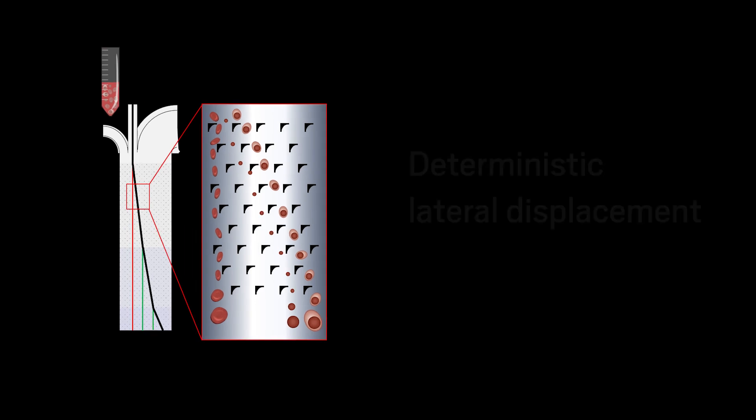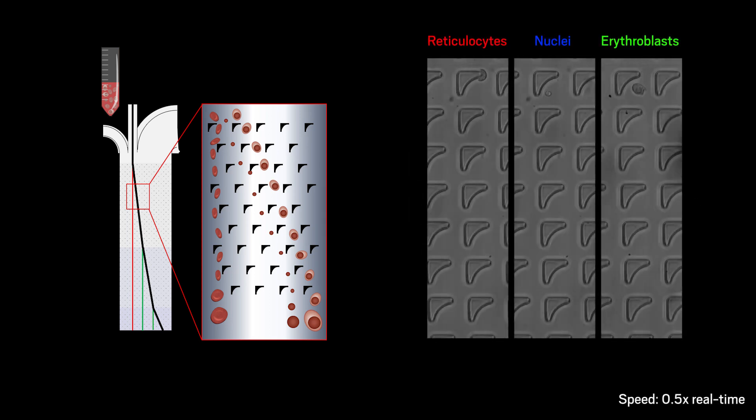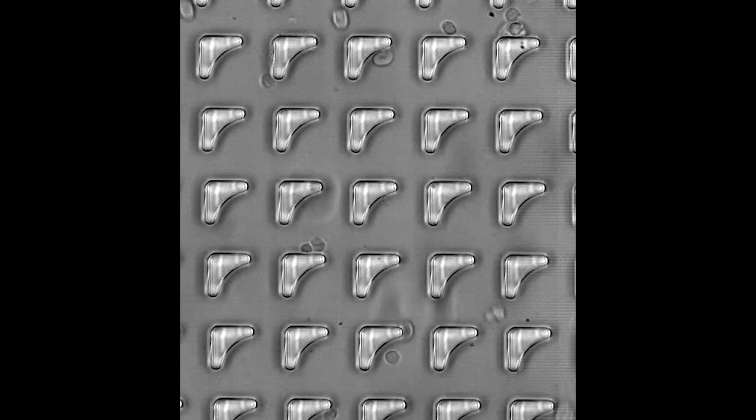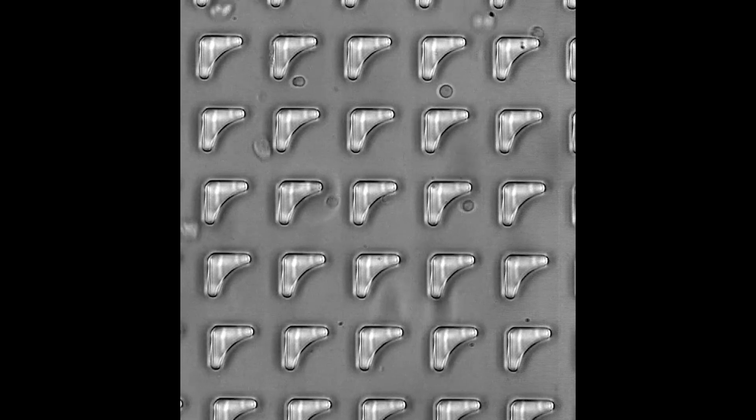One method is called deterministic lateral displacement. In this approach, the cells and cell components' unique size and deformability cause them to interact differently with pillared structures. Like a rigged game of Plinko, reticulocytes tend to fall to the left, whereas nuclei and erythroblasts slide to the right. This method can produce reticulocyte collections that are as pure as those sorted by FACS, but at two to three times the speed.